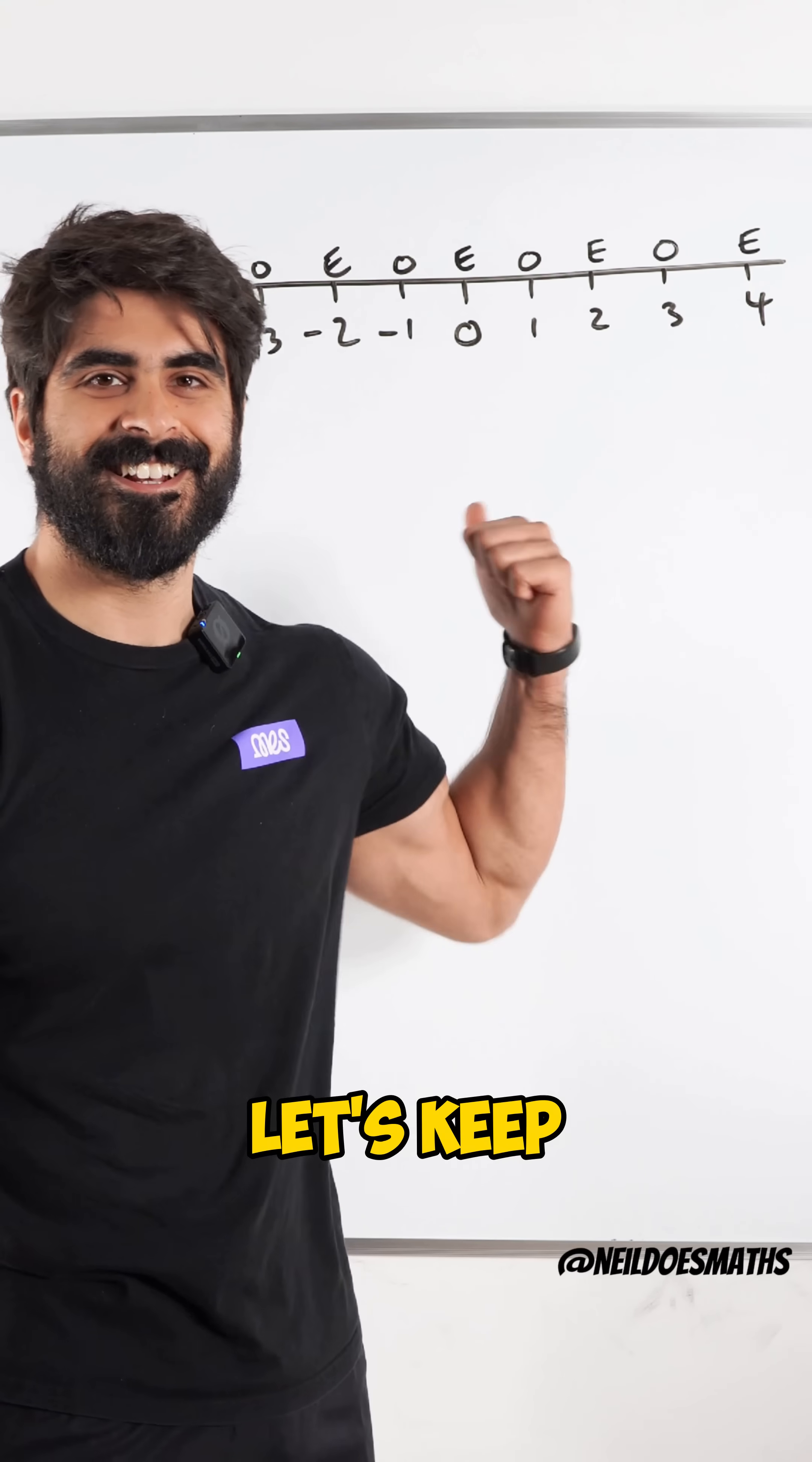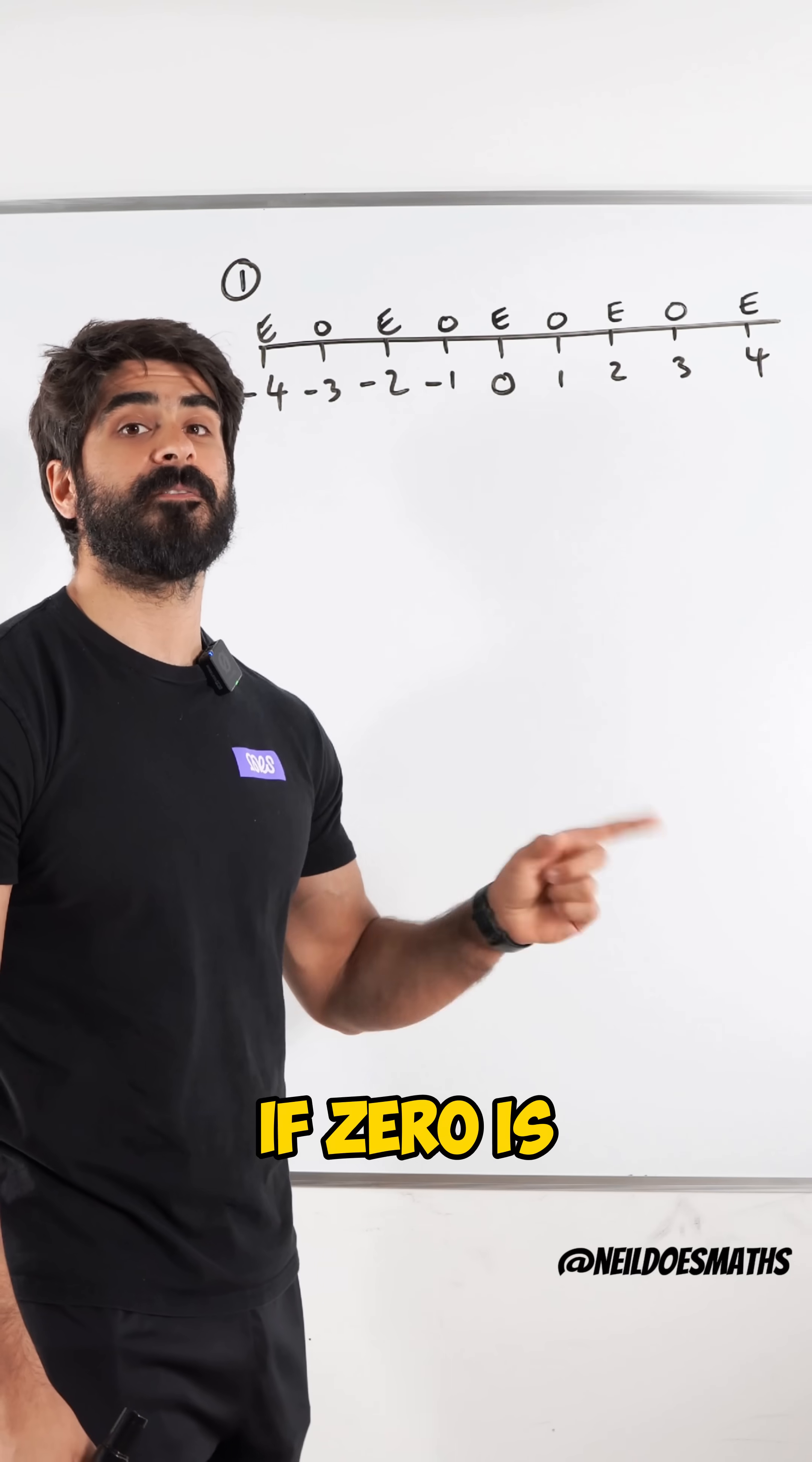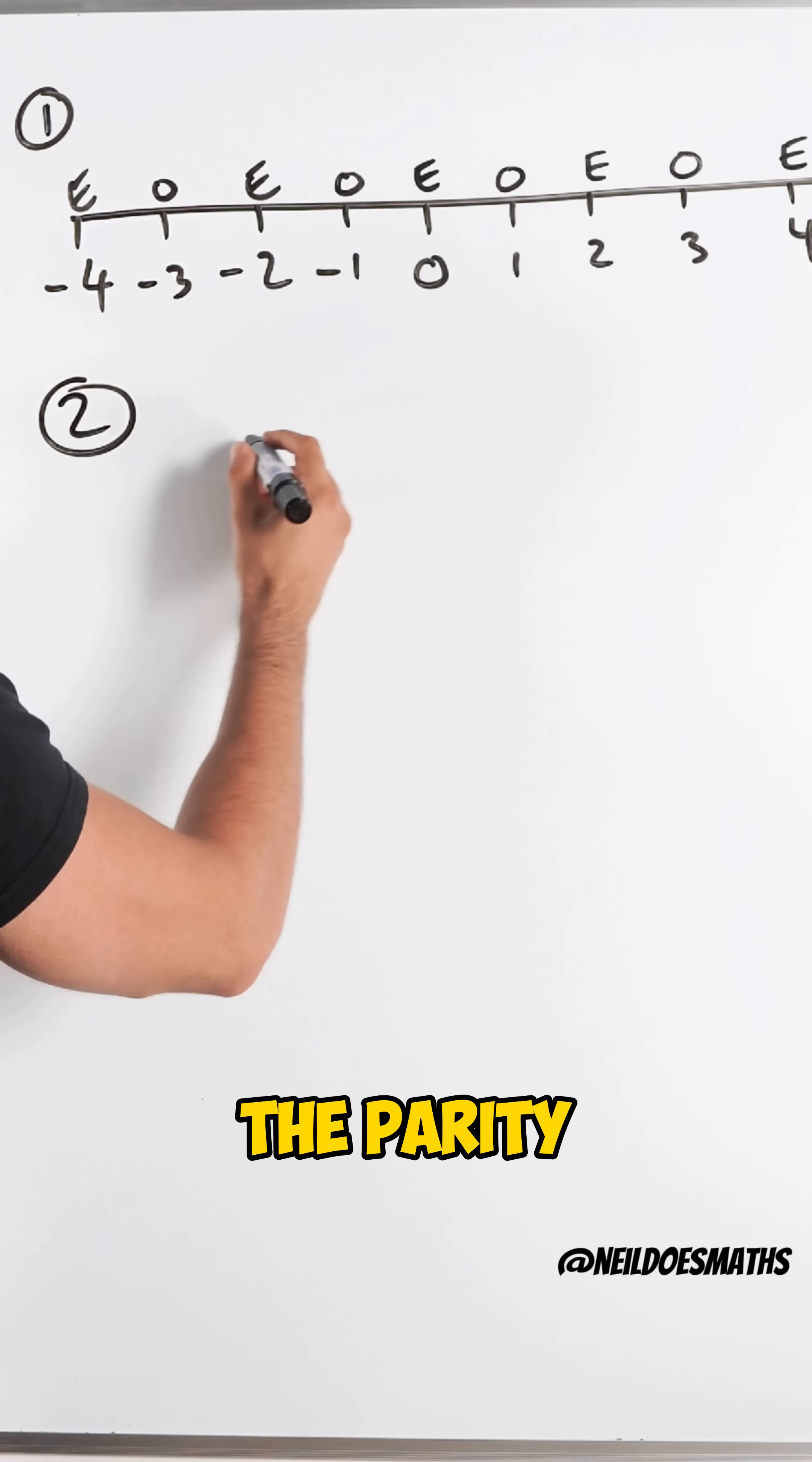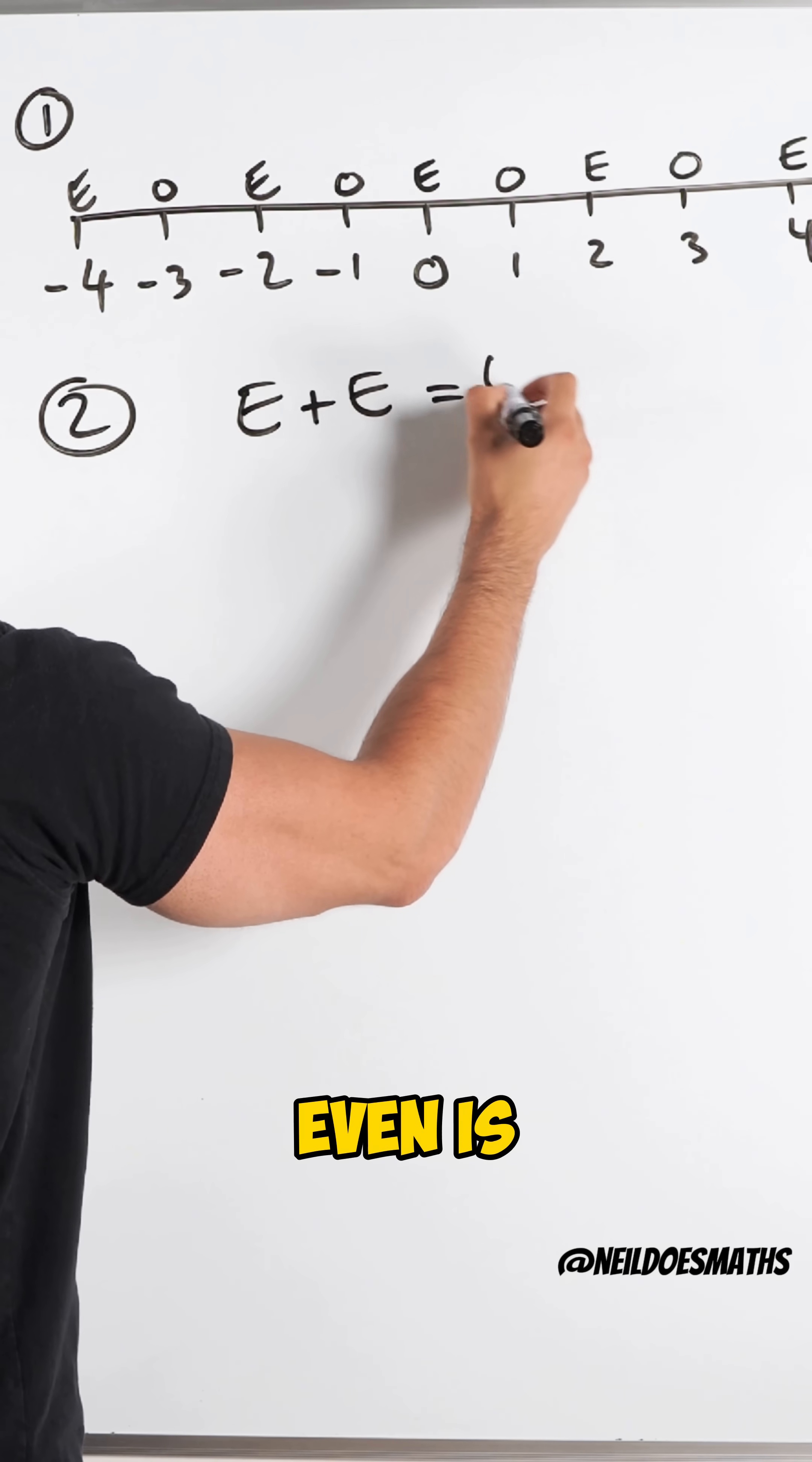If you're not convinced, let's keep looking. The second thing is if zero is an even number, it must follow the parity rules, meaning even plus even is even.